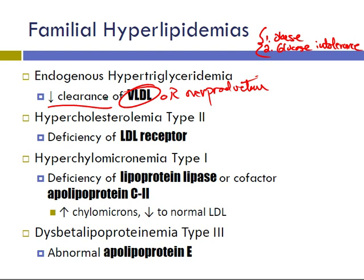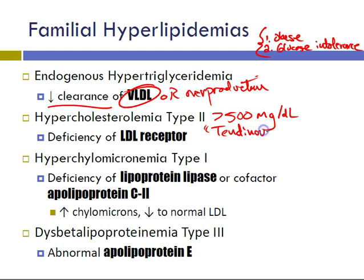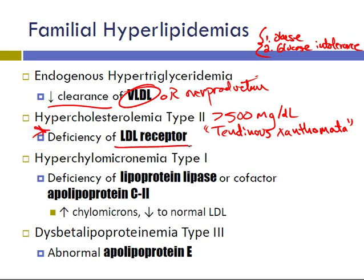Hypercholesterolemia type 2 involves large elevations in serum cholesterol, usually greater than 500 mg/dL. Patients can get tendinous xanthomata — that's your buzzword. A good tip-off clue on the boards is they get early atherosclerotic cardiovascular disease. The key thing to know is it is a deficiency of the LDL receptor.